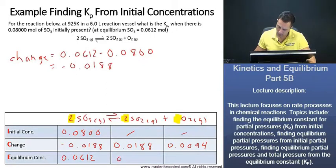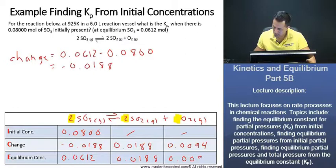And now, at the equilibrium concentration, this is going to be 0.0188, 0.0094. Wonderful.